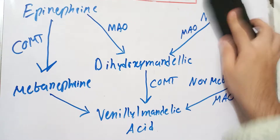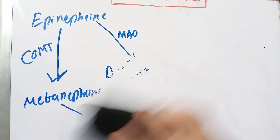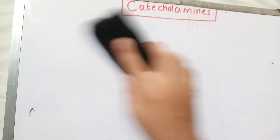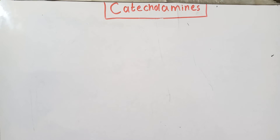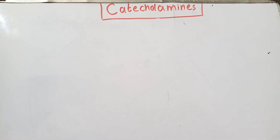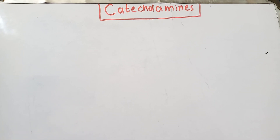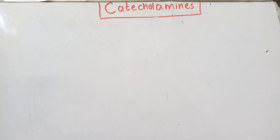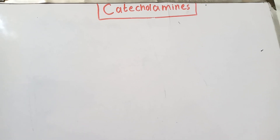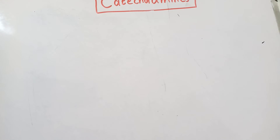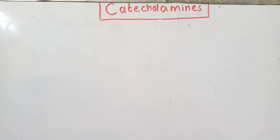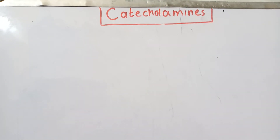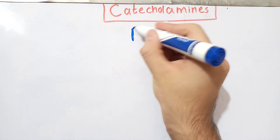There is a disease called pheochromocytoma, which is a tumor of the suprarenal medulla. When the suprarenal medulla cells divide haphazardly, they form this tumor. Epinephrine and norepinephrine are produced in great quantities and also degraded in great quantities, so vanillylmandelic acid concentration will increase in the urine.